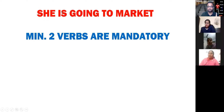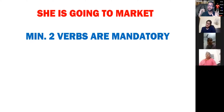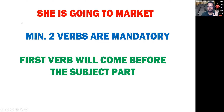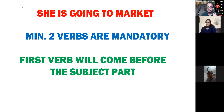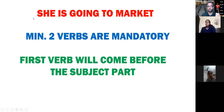And you can clearly see — here there are already two verbs. The first verb is 'is' and the second verb is 'going.' This means the sentence is ready — we can make its interrogative. The first verb will come before the subject part. पहला वाला verb है 'is', तो वो subject part 'she' के पहले आ जाएगा। First verb is 'is', so it will come before 'she.' No other verb will move — only the first verb comes before the subject part.